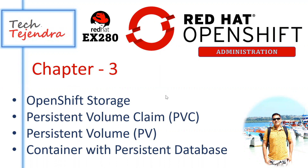In this chapter, we will learn OpenShift Storage, Persistent Volume Claim (also known as PVC), and Persistent Volume. At last, we will do a lab in which we will see how we can persist our database. We will create one application, attach the PVC and PV to that application, store some data, remove the application, create a new one, and attach the previous PVC to verify whether our data is persisted.